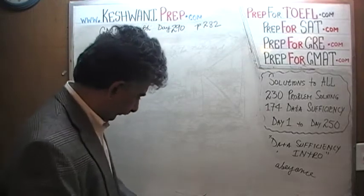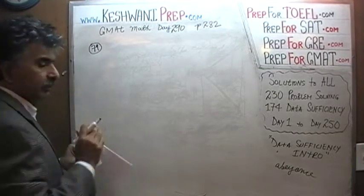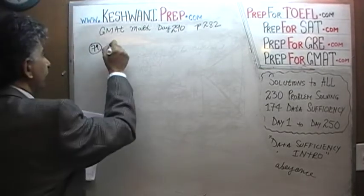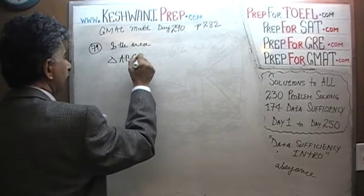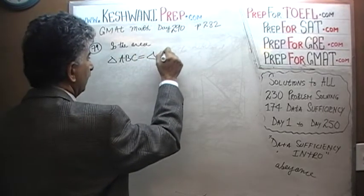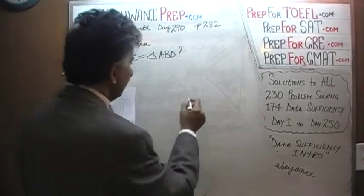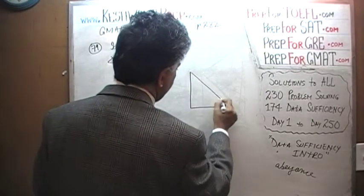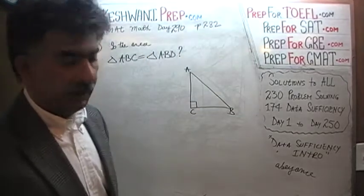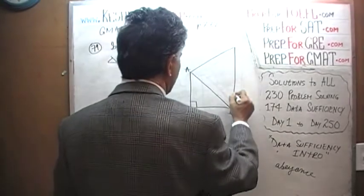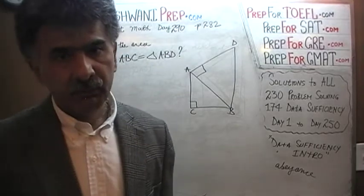Let's see what they tell us. In problem 79, the question is pretty straightforward: is the area of triangle ABC equal to the area of triangle ABD? Here is a picture they gave us. Triangle ABC looks like this — A, B, C. We are told it is a right-angle triangle, and on top of that we have another triangle which also happens to be a right-angle triangle. The question simply is: are these two areas equal?